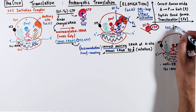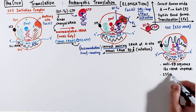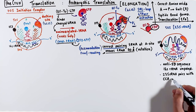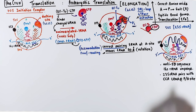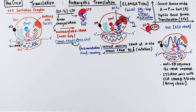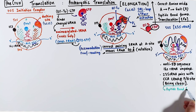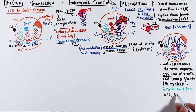Now another player enters this elongation process. The 50S subunit contains a 23S ribosomal RNA, which specifically pairs with both transfer RNAs at the P and A sites. It recognizes the CCA sequence at their 3' ends, and this pairing further brings the P and A site transfer RNAs into close proximity. This act of bringing them closer triggers the formation of a peptide bond between the amino acid on the P site tRNA and the amino acid of the tRNA on the A site.